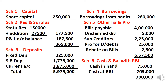Schedule 4 — Borrowings from Banks. Schedule 5 — Other Liabilities and Provisions: Bills Payable, Unclaimed Dividends (dividend issued but not paid), Sundry Creditors, Provision for Bad Debts (adjustment item), Rebate on Bills Discounted 2,500. Schedule 5 complete.